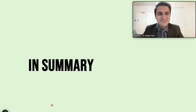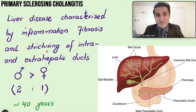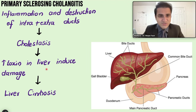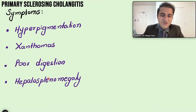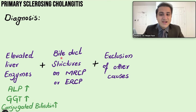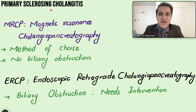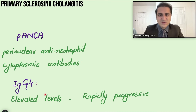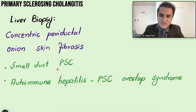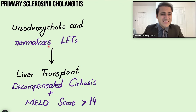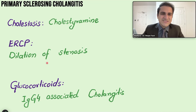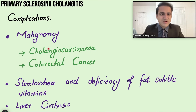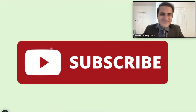In summary: PSC involves both intra- and extrahepatic ducts, compared to PBC which affects only intrahepatic ducts. It has a strong association with inflammatory bowel disease/ulcerative colitis. Diagnosis uses elevated LFTs, bile duct strictures on MRCP, and exclusion of other causes. pANCA is supportive; IgG4 must be tested and treated with steroids if positive. Liver biopsy is used for small-duct disease or overlap syndrome. UDCA has limited evidence; liver transplant is the mainstay. Complications include malignancy, steatorrhea, and cirrhosis.